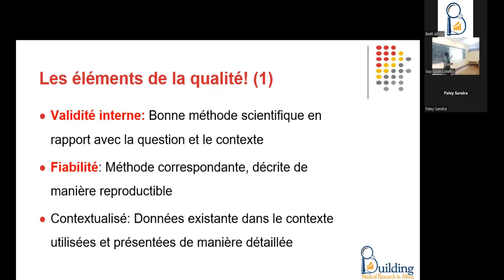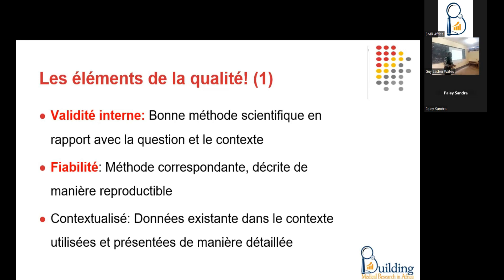L'autre critère, c'est la fiabilité. Ça veut dire que la méthode que j'ai utilisée, je dois pouvoir la décrire de manière reproductible. Il faudrait que la façon dont tu vas faire la recherche, collecter les données, recruter les participants, analyser, etc., soit faite de telle sorte que quelqu'un d'autre peut reproduire exactement la même chose, parce que tu auras décrit de manière reproductible.